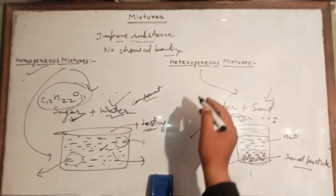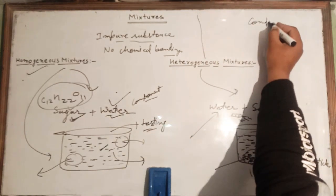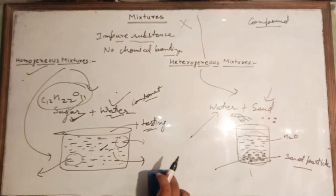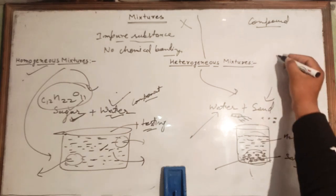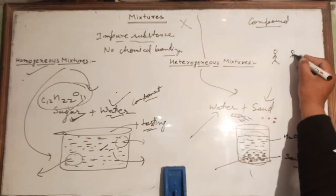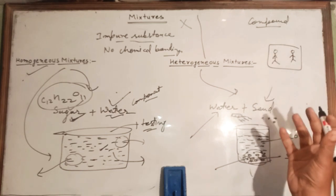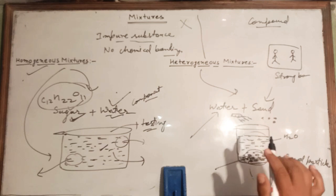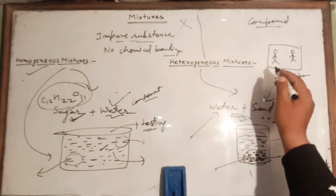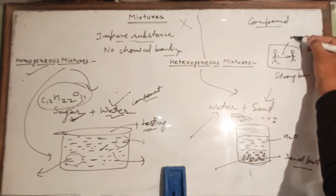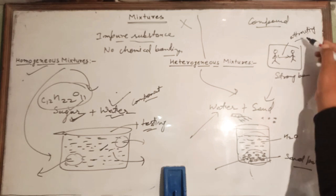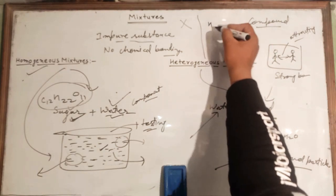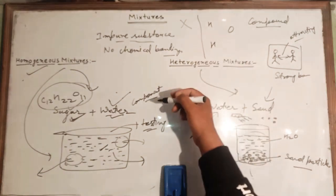One important distinction: what is the difference between compounds and mixtures? In compounds there will be chemical bonding, whereas in mixtures there will be no chemical bonding. Chemical bonding is essentially an attraction force. Suppose you and your friend have a strong bond — there is a strong attraction force between you. Similarly, in H₂O, the oxygen atom attracts both hydrogen atoms, forming a compound.